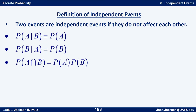If you can show that P(A|B) is the same as just P(A), the two events are independent. Likewise, if you can show P(B|A) is the same as P(B) with no other information, then A and B are independent events. Or if you can show that P(A∩B) = P(A) · P(B), that is enough to say that they are independent events.